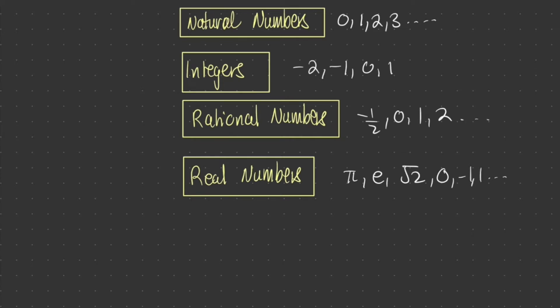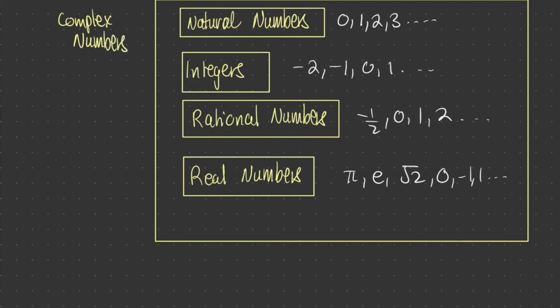Now, where do complex numbers fall in all of this? Complex numbers actually fall outside this. And these include the negative square roots and your imaginary numbers such as 4i, a plus 3i.